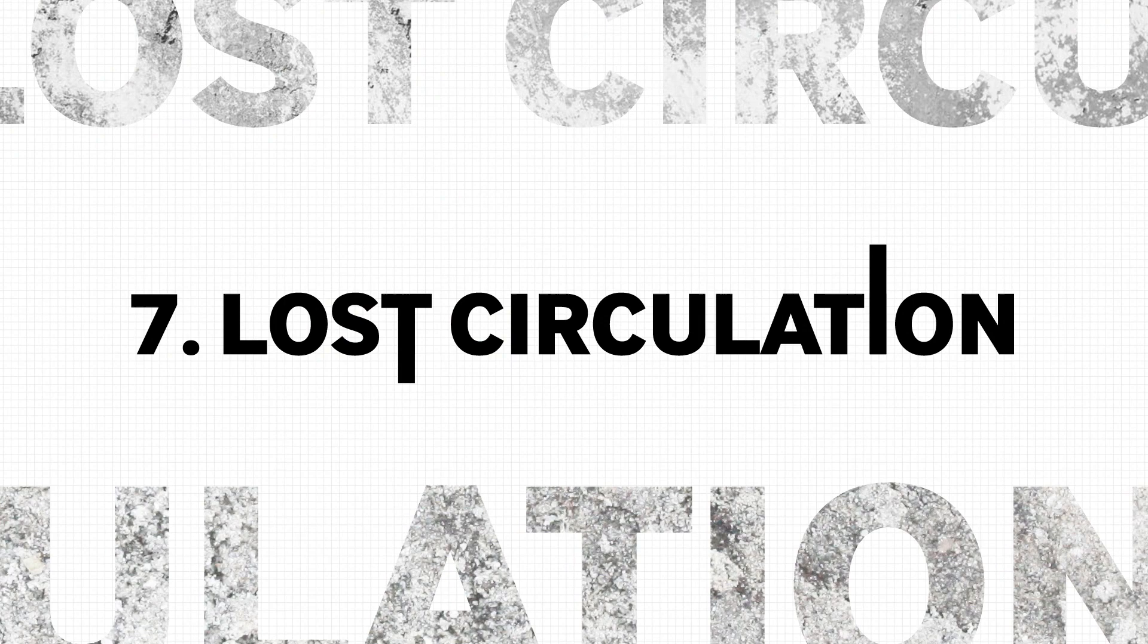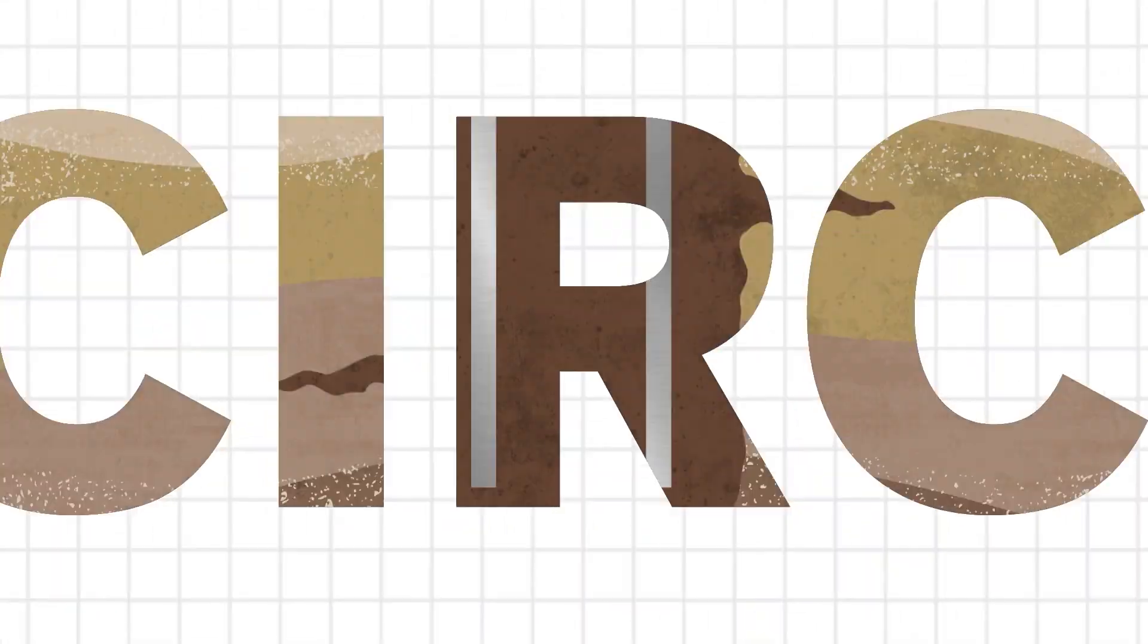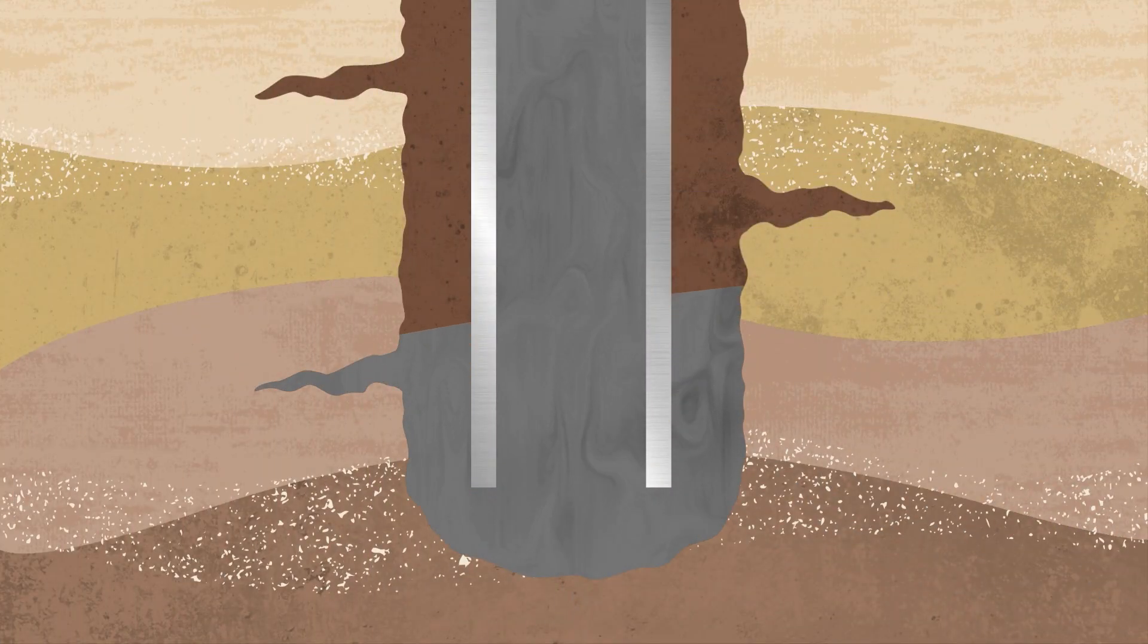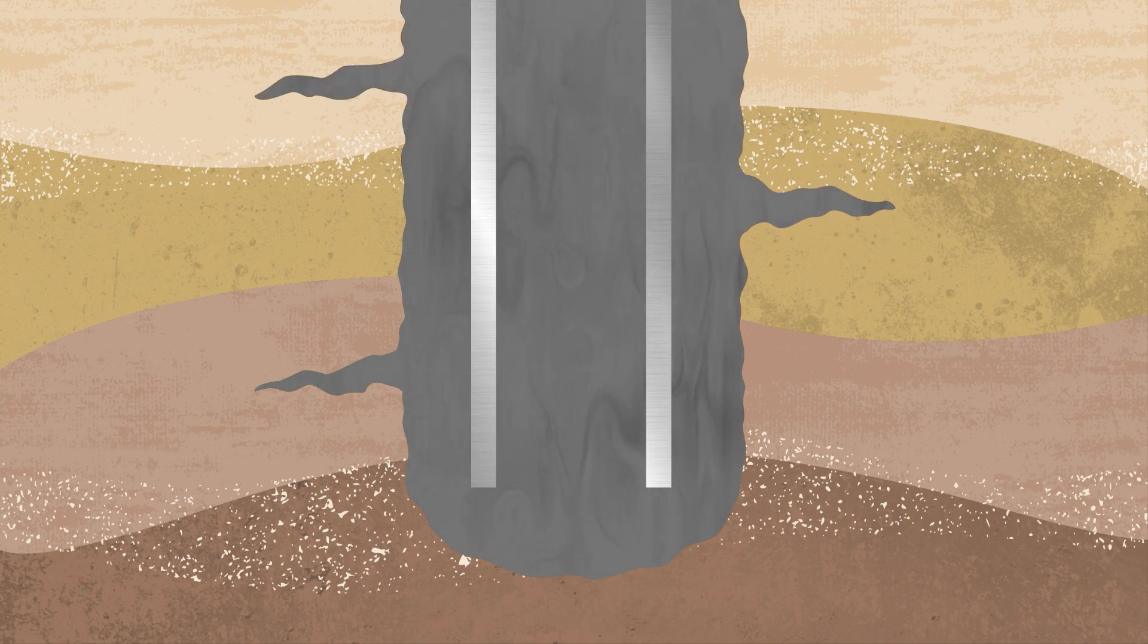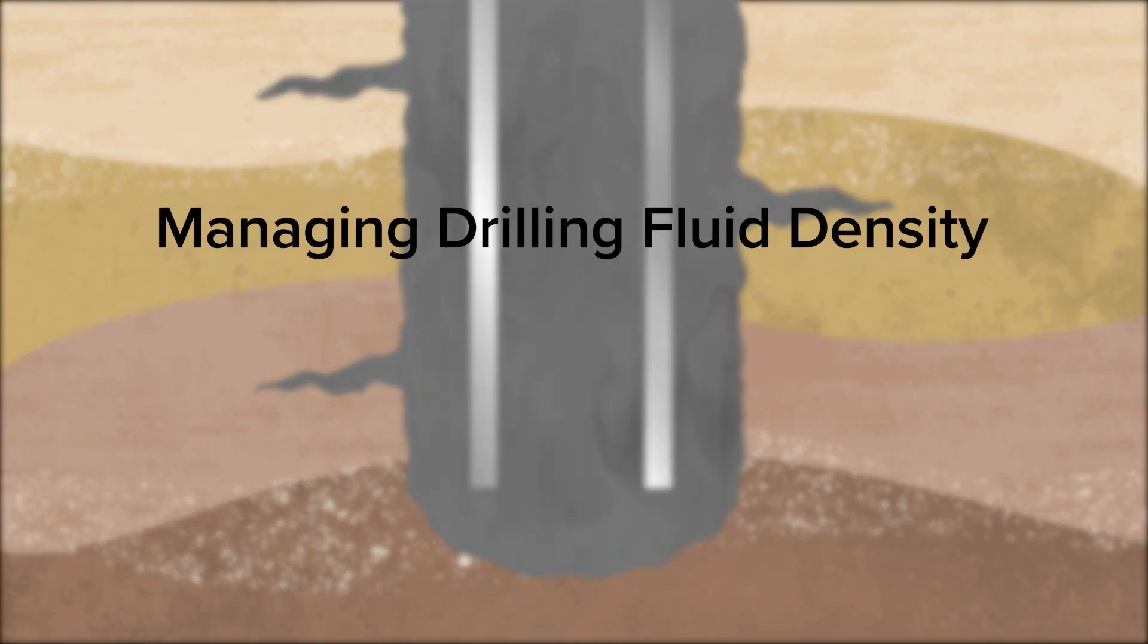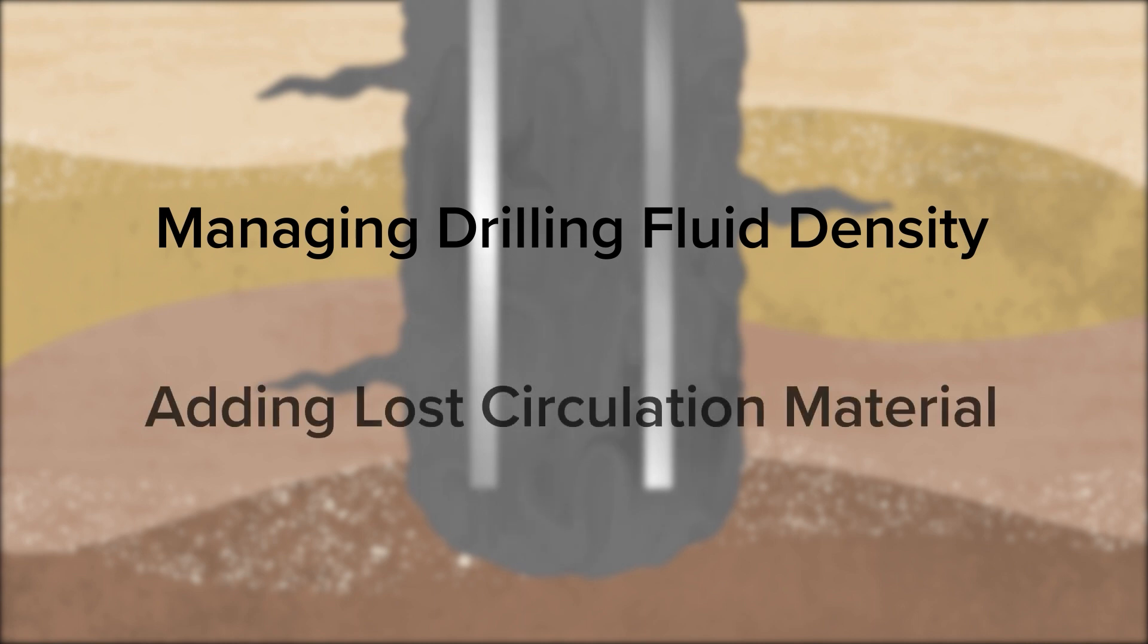Lost circulation is observed when returns are not coming back to the surface as a result of fluids lost to the formation. Preventing lost circulation involves managing the drilling fluid density and remediation can be achieved by adding lost circulation material during the drilling process.